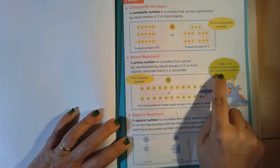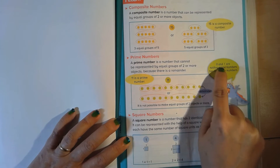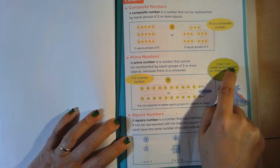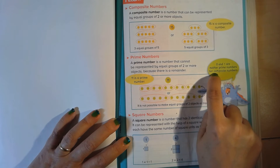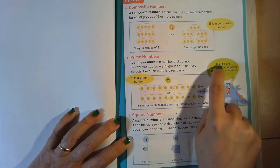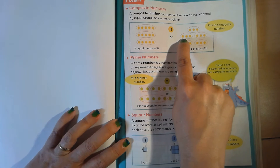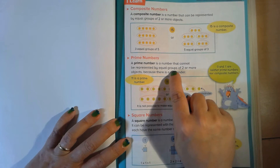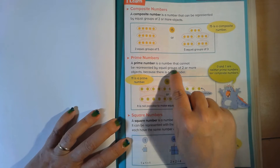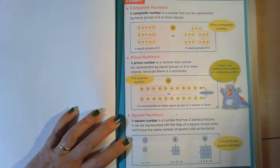It's also important to note that the numbers zero and one are neither prime numbers nor composite numbers. So zero is not a prime number and zero is not a composite number. One is not a prime number and one is not a composite number.